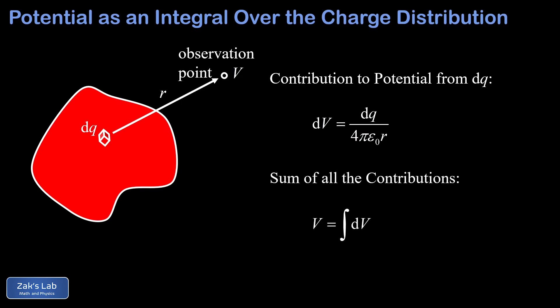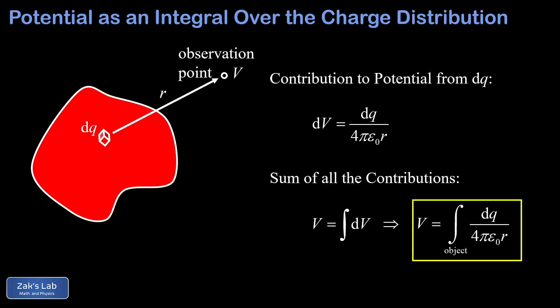The summation of infinitely many infinitesimal contributions is an integral. We add up all the dVs — that's the integral of dV — and plugging in the expression for dV we arrive at the physical integral for the potential due to a continuous distribution: the integral over the object of dq over 4πε₀r. Now we have the formula and it's time to swing the mighty hammer of physical integration on our first example.